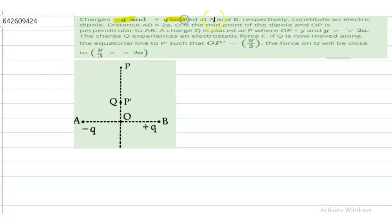AB is equal to twice of a. O is the midpoint of the dipole, and OP is perpendicular to AB. A charge Q is placed at point P.